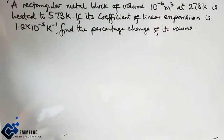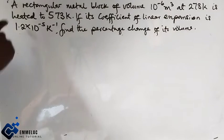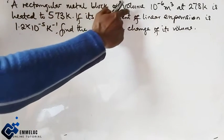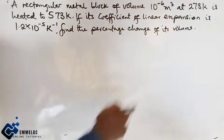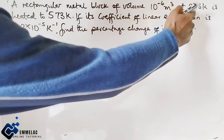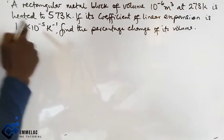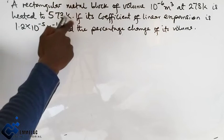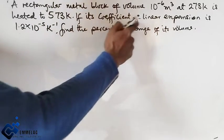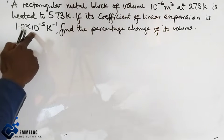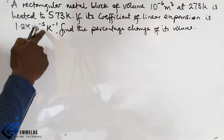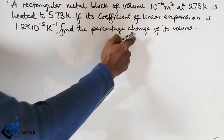Welcome to Emelac online tutorial. Before us today is a question in linear expansivity: a rectangular metal block of volume 10^-6 m³ at 273 Kelvin is heated to 573 Kelvin. If the coefficient of linear expansion is 1.2×10^-5 per Kelvin, find the percentage change of the volume.